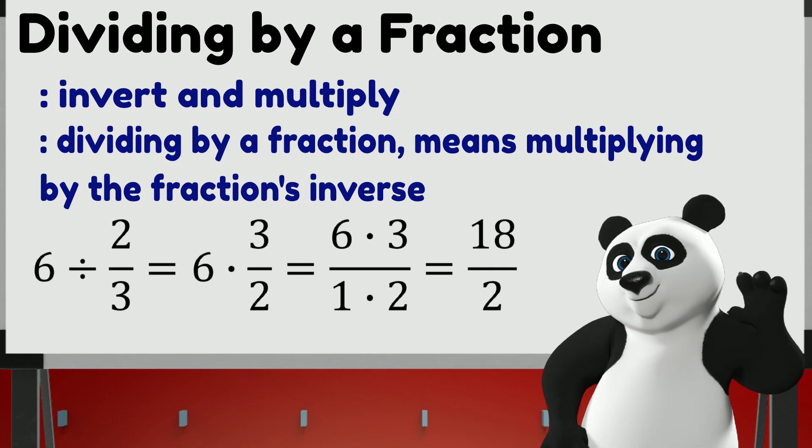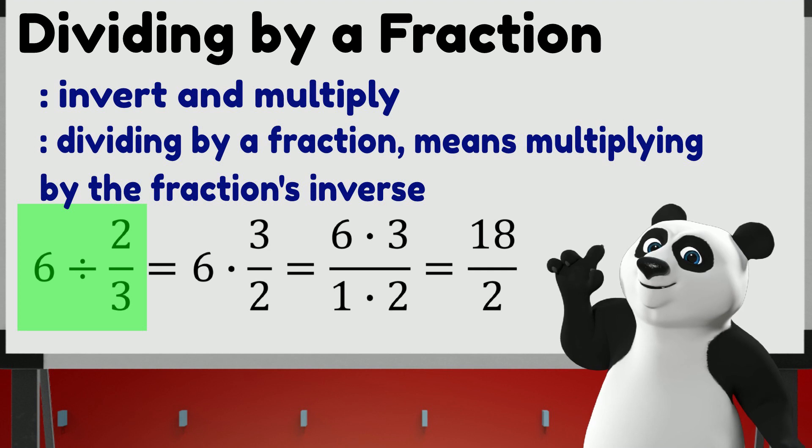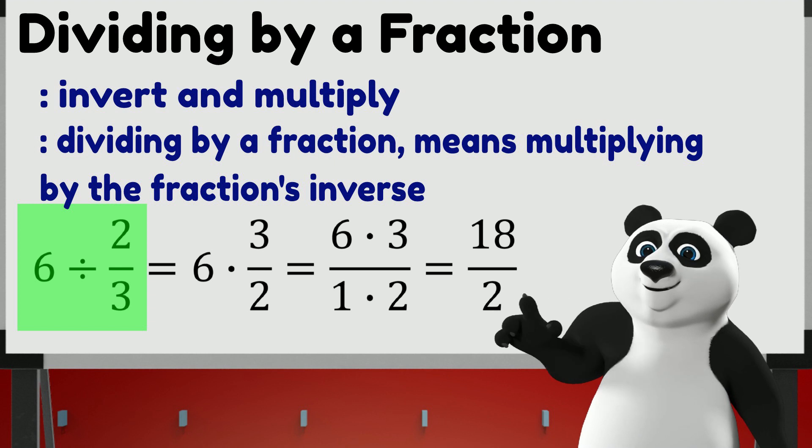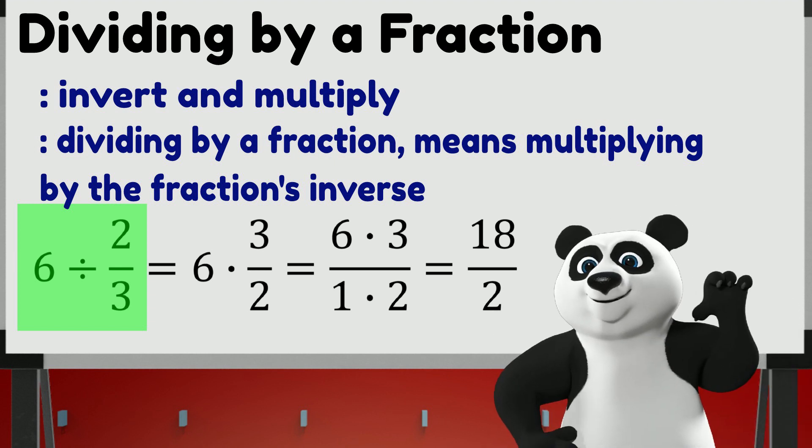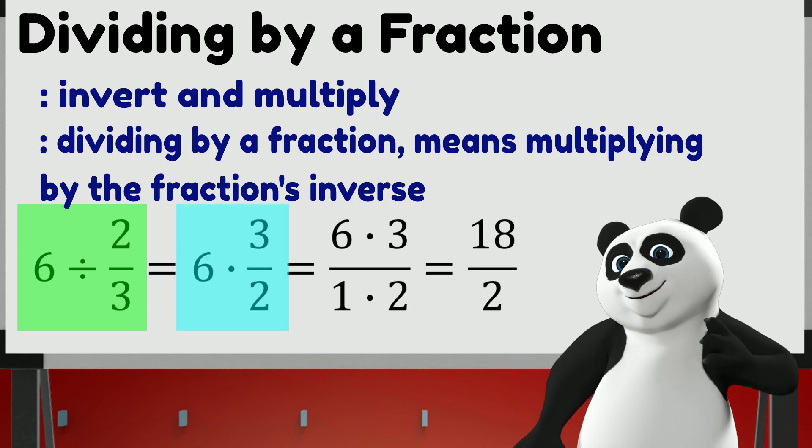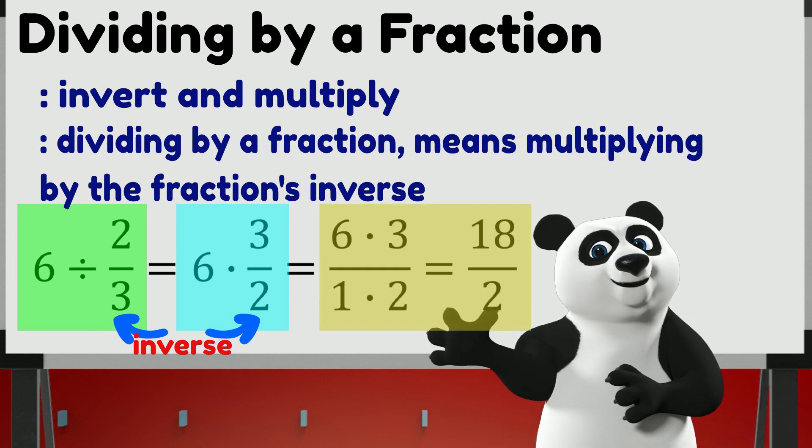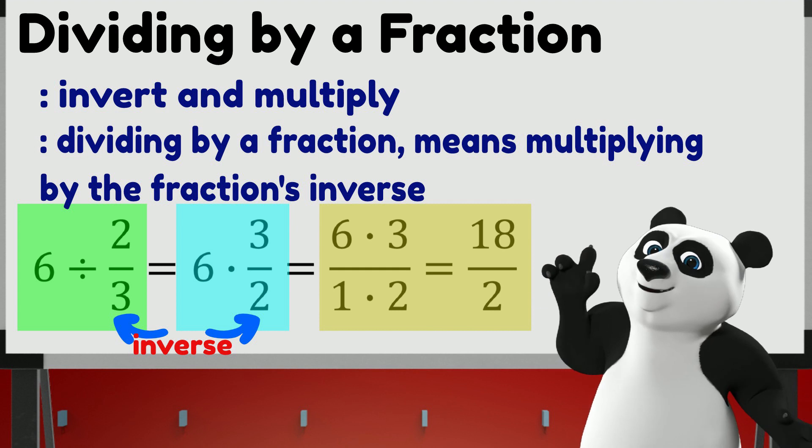Let's look at a simple example: 6 divided by 2 thirds. Following the rule, invert and multiply, we get the inverse of 2 thirds and multiply with 6. That then means 6 times 3 halves. 3 halves is the inverse of 2 thirds. 6 times 3 halves is equal to 18 halves.